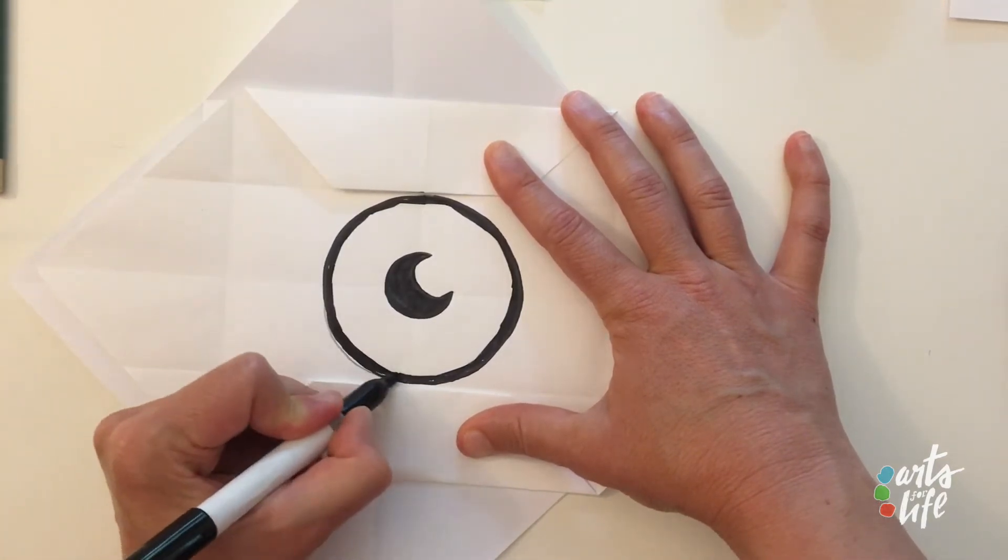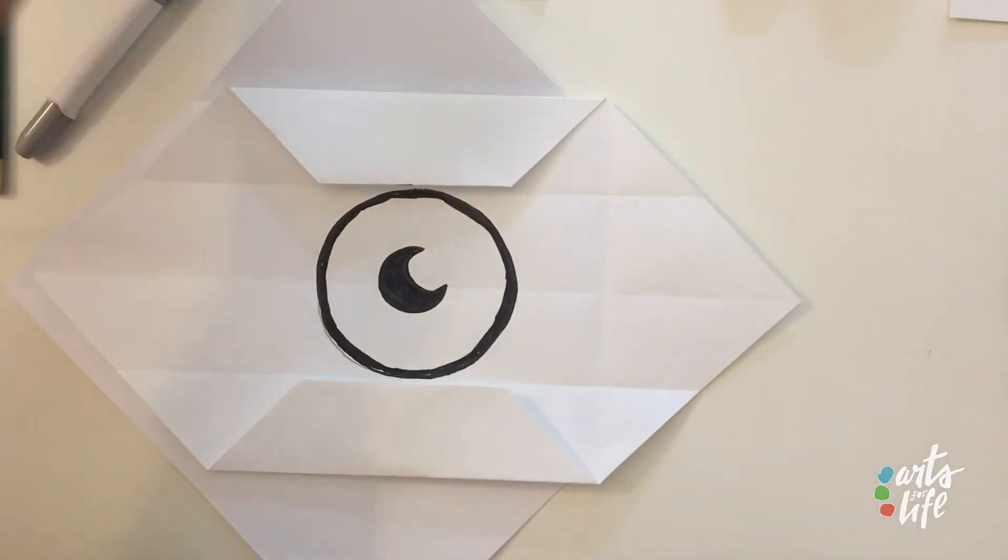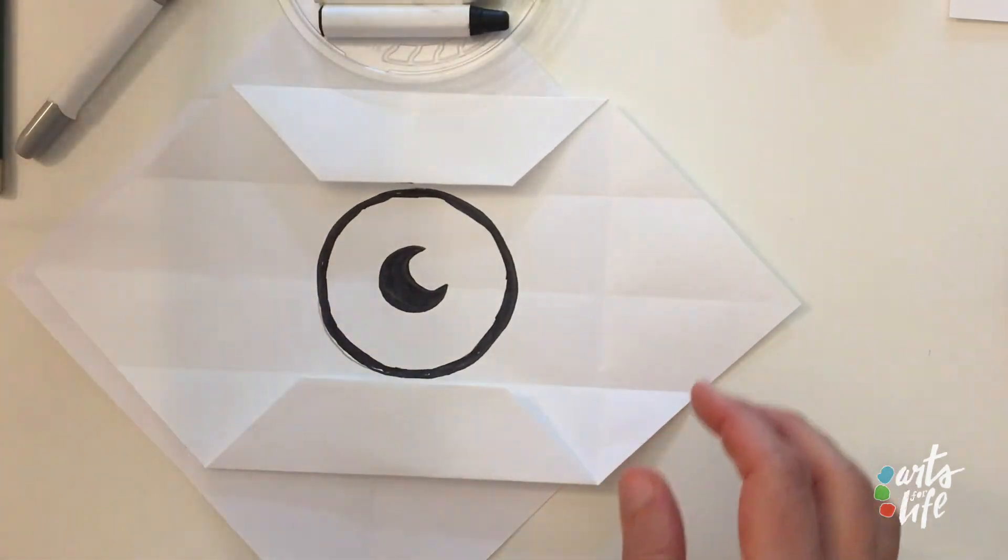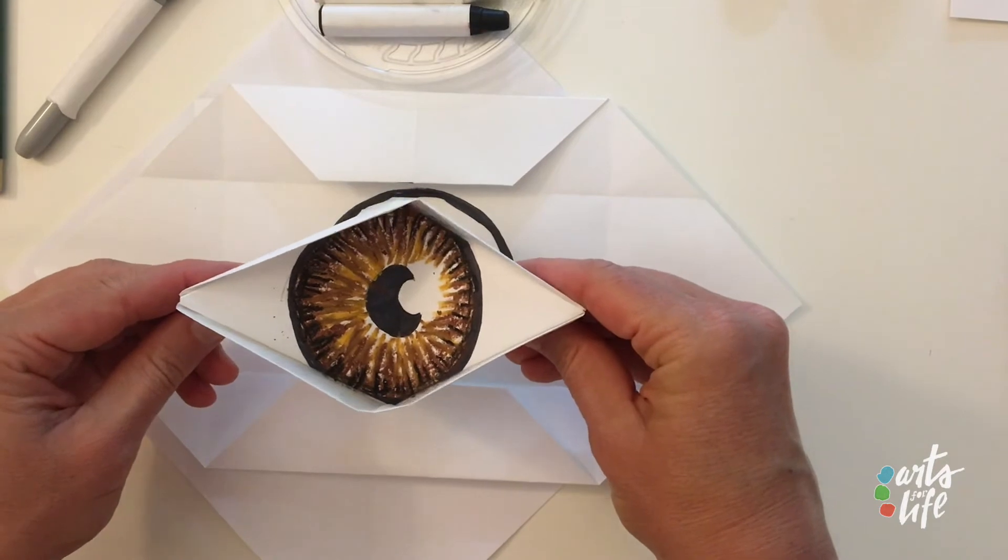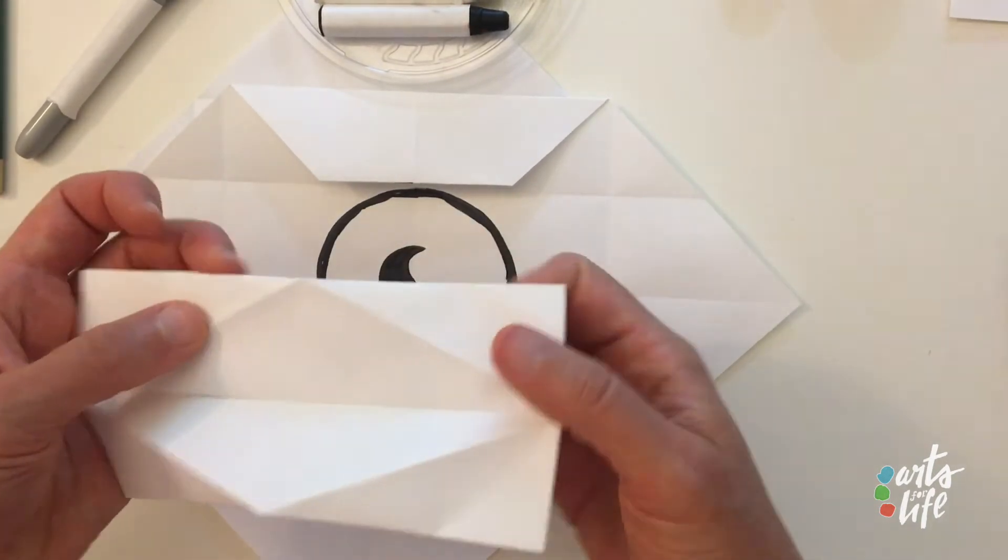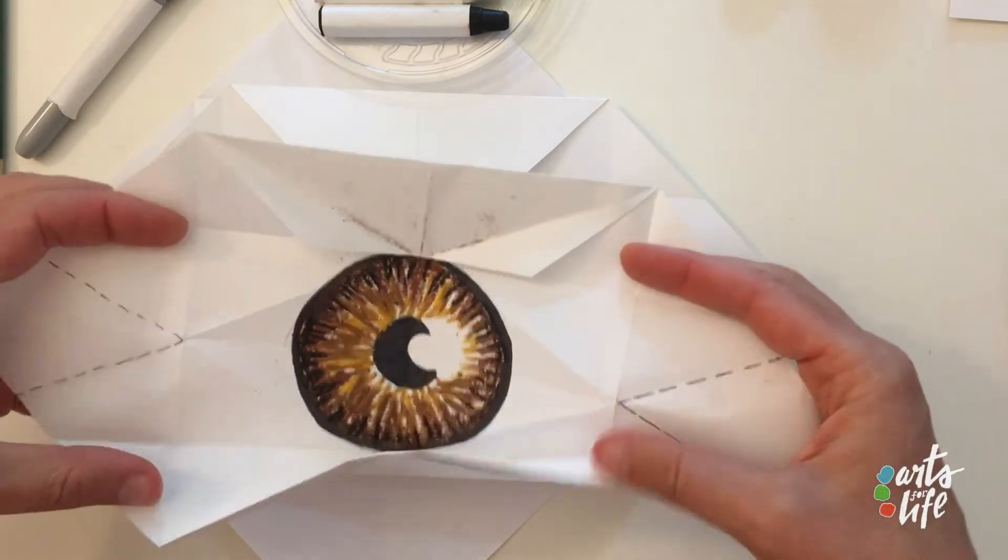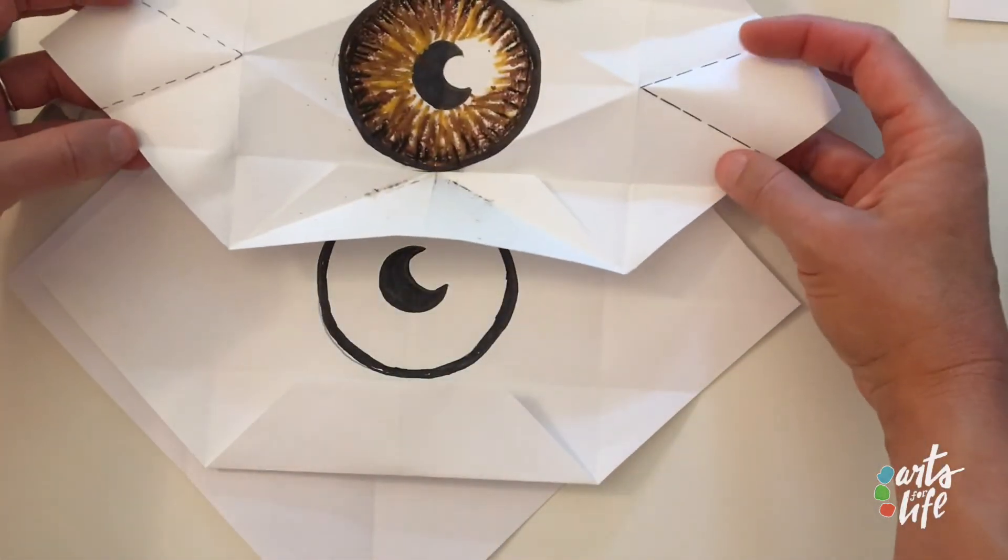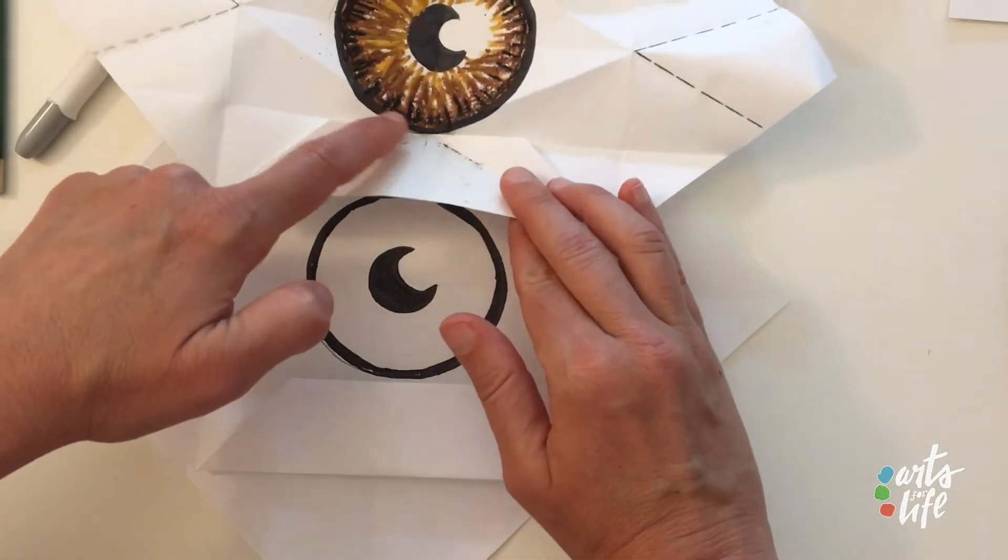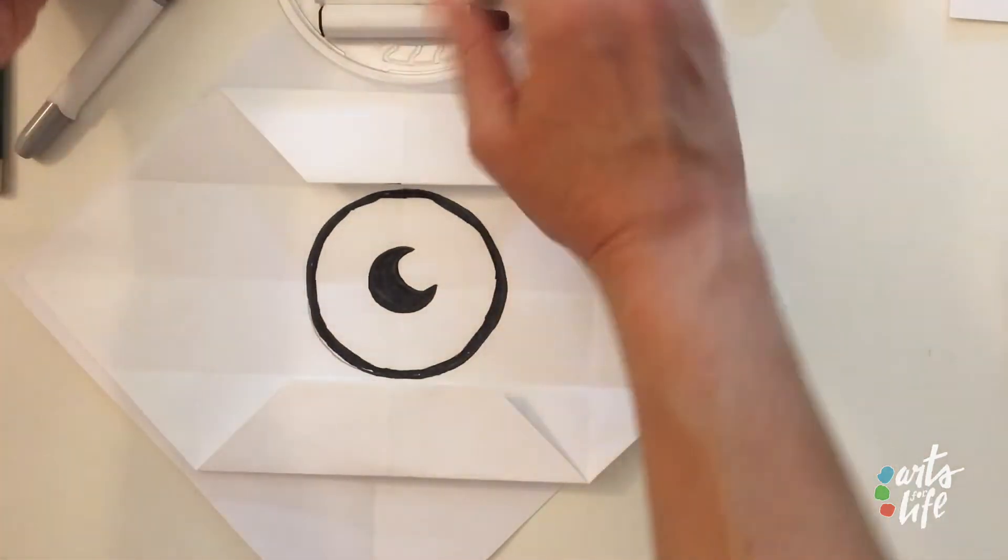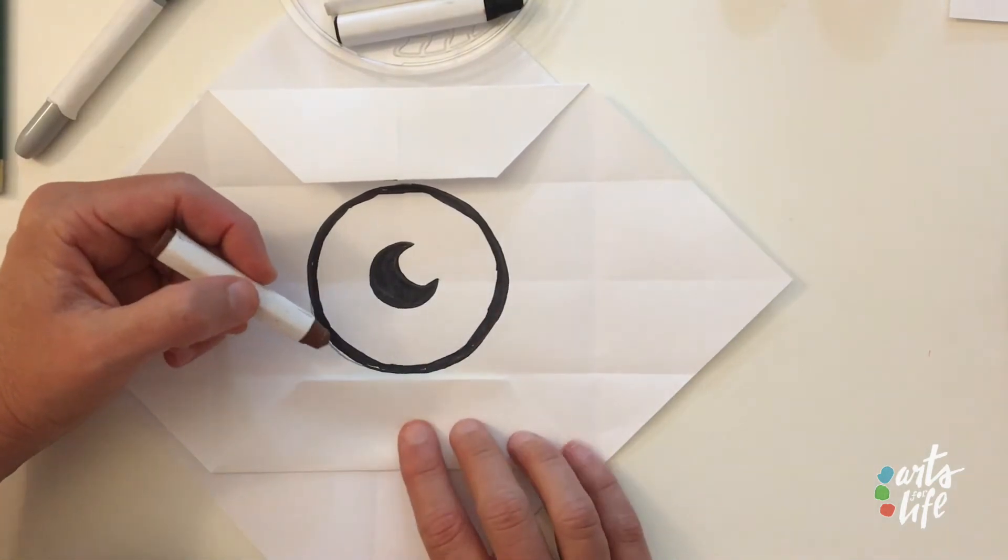Now we're going to outline the pupil with our permanent marker or you can just use a regular dark color marker and then I'll color it in. And you can make this eye like your eye or you can make it like somebody else. So somebody you admire, a friend, a hero of yours, just any eye. So you can just think about that when you're coloring your eye and when you're picking your colors for the eye. So there's the outline. I'll make it a little thicker.